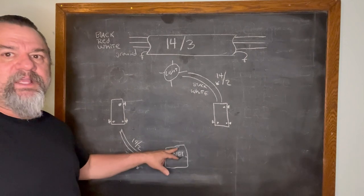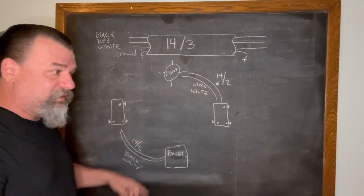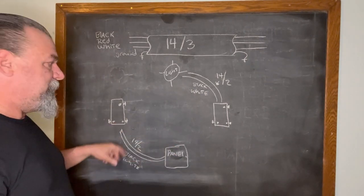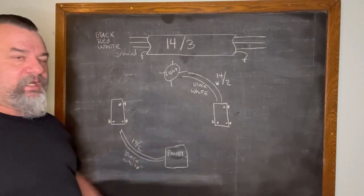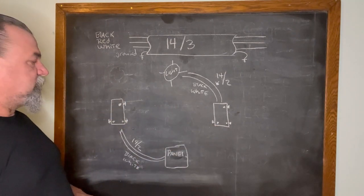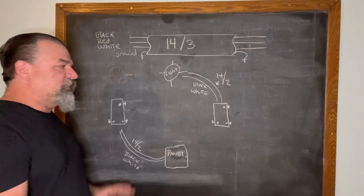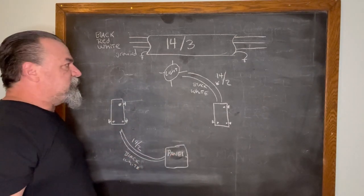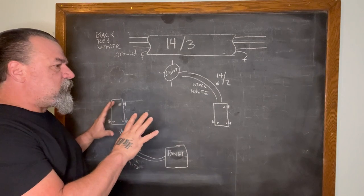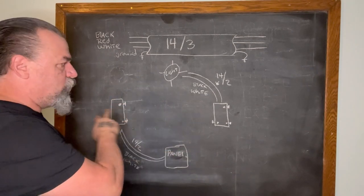And the other switch, let's say that's coming from the panel. 14-2 up. You already had your red and your blacks tied in and then your hot goes right there to the common. Simple enough, right? So there's really nothing to it with the 14-2 wire coming through it.